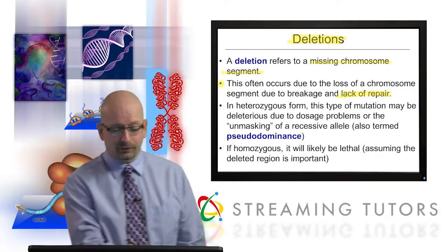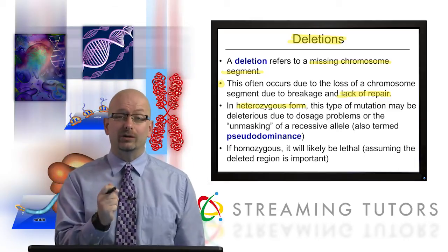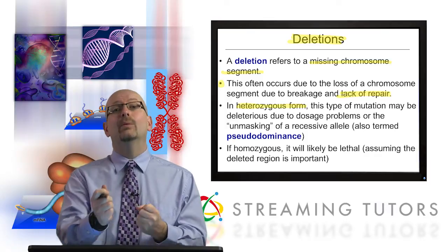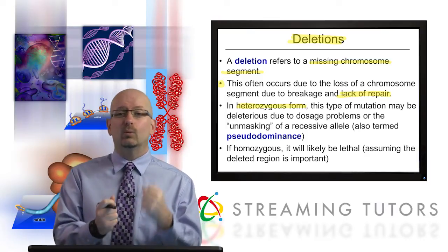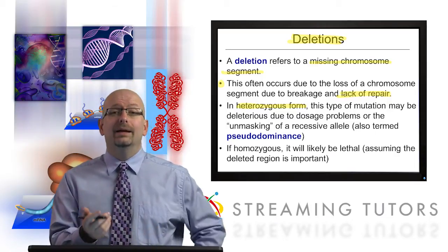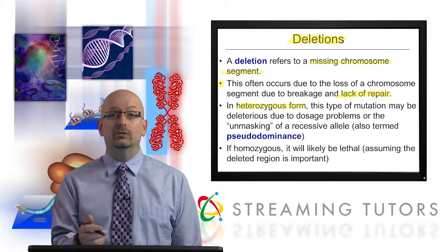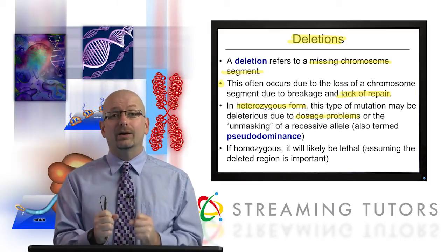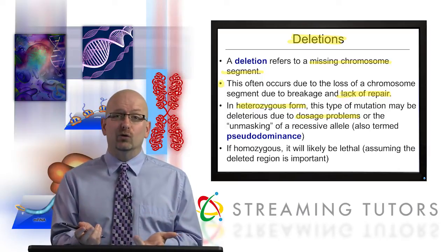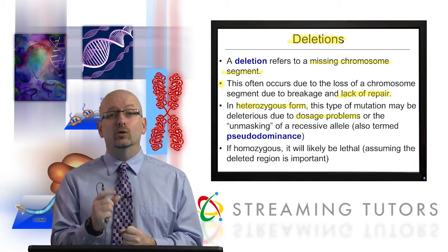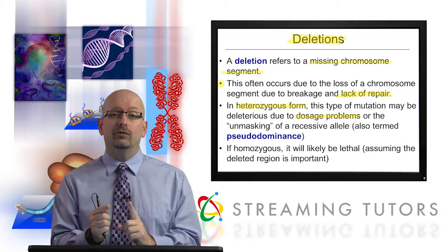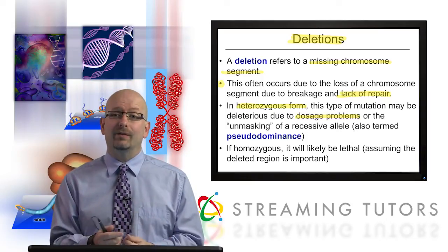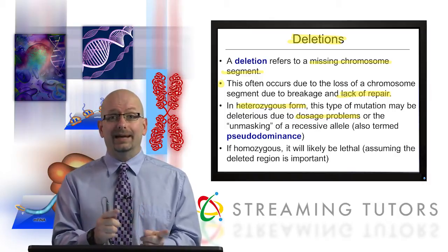We can make some generalized statements. In a heterozygous form — most people, if there was a stable deletion, would inherit it from one of their parents and get a normal chromosome from the other parent. So you'd have one normal and one deleted chromosome — you'd be a deletion heterozygote. This type of mutation may be deleterious due to dosage problems. Eukaryotes are supposed to have two copies of every gene. So if you have a deletion and you're missing one copy of a gene, there's a dosage effect — instead of two, you only have one. There's no global way of saying exactly how that will affect things, but dosage problems do exist.